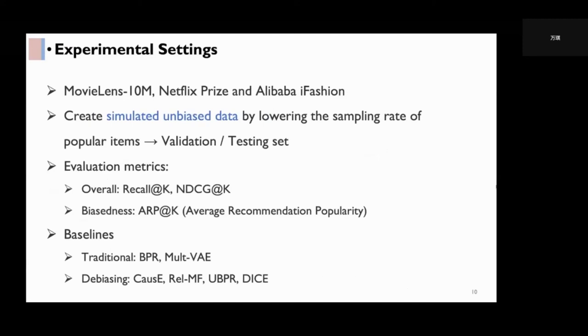To evaluate the debiasing approaches, we create simulated unbiased data by lowering the sampling rate of popular items and divide these data into validation and testing sets. We measure the models' performances by recall and NDCG and also measure their biasedness by their average recommendation popularity.